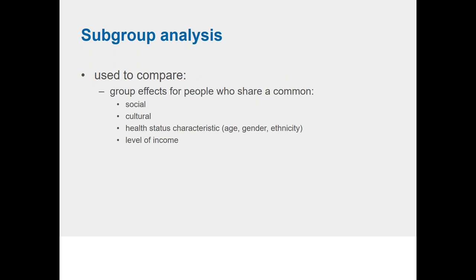In your protocol, pre-specify your subgroup analyses. These compare the effects of interventions across certain groups. In the Baker 2015 example, they compared effects among groups such as social groups, cultural characteristics, health status, age, gender, ethnicity, and level of income. Subgroup analyses would be performed where sufficient data are available.